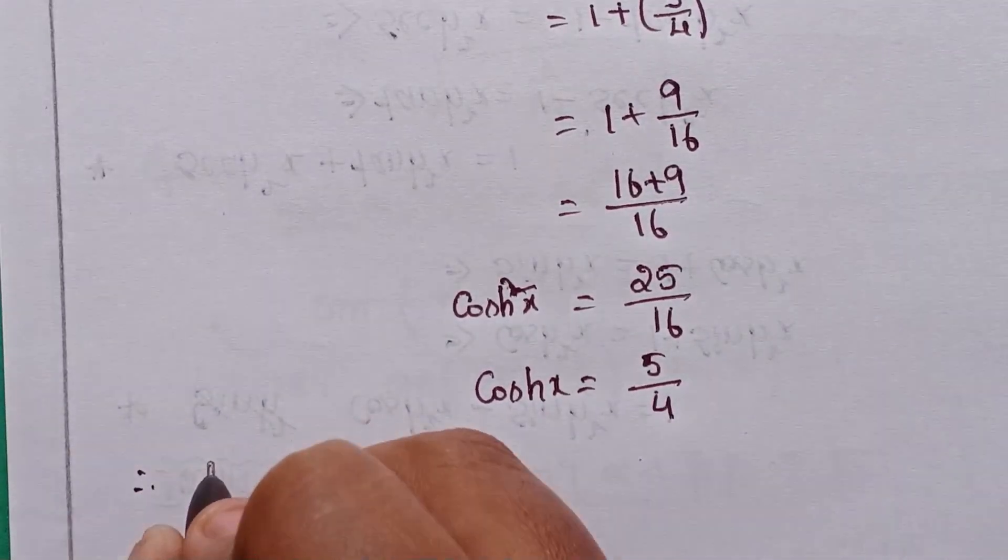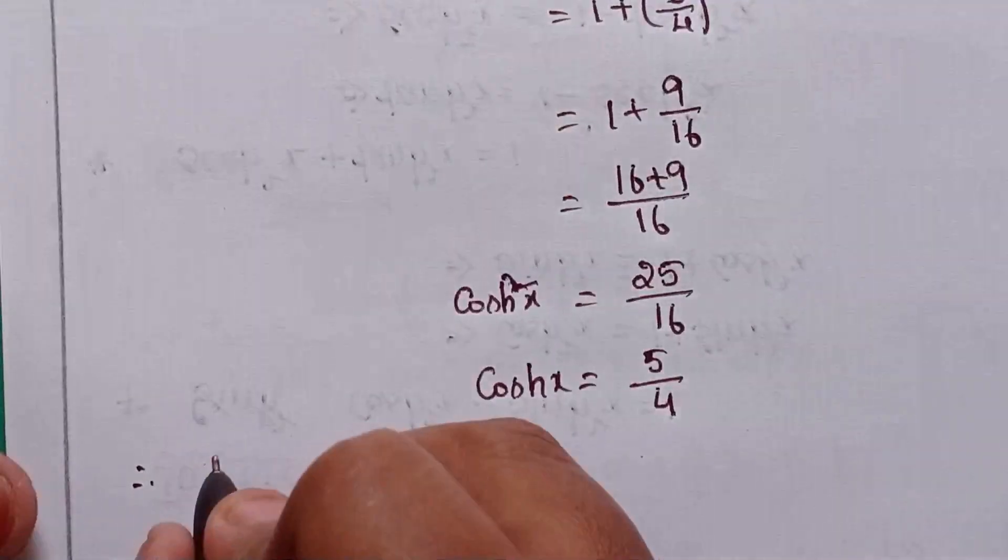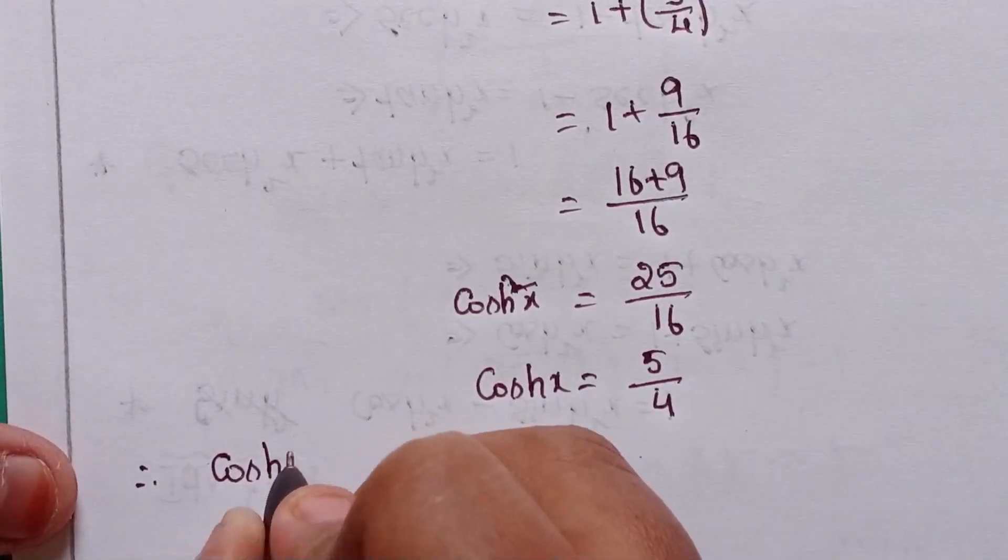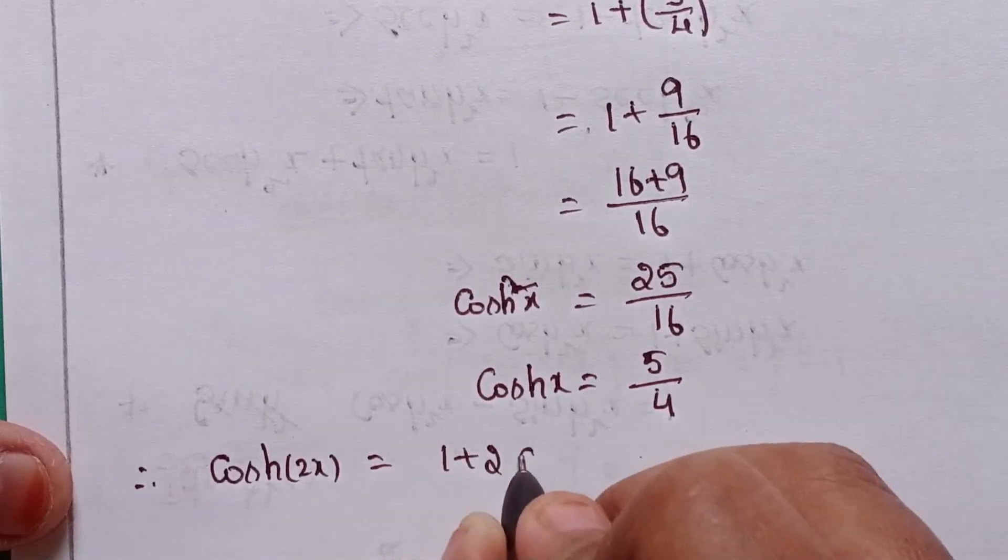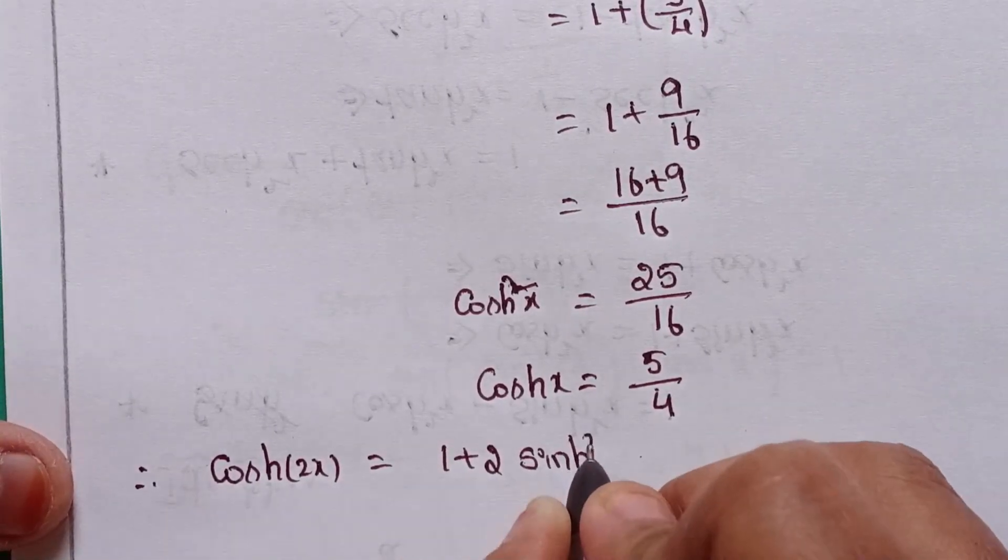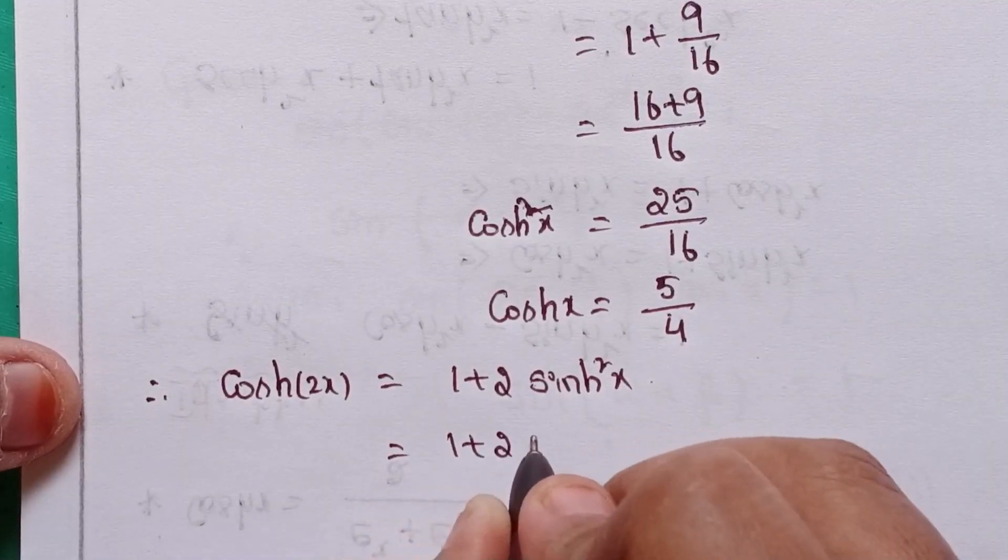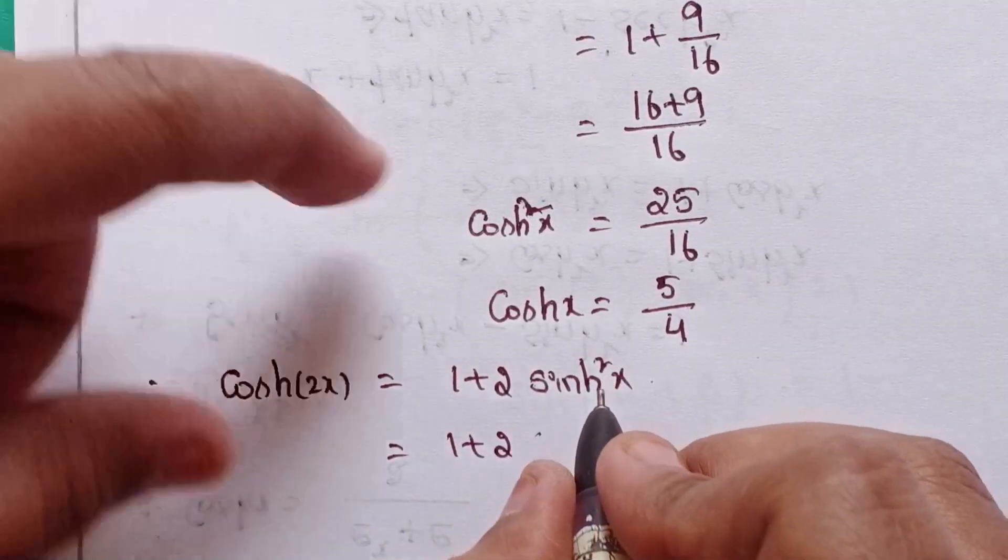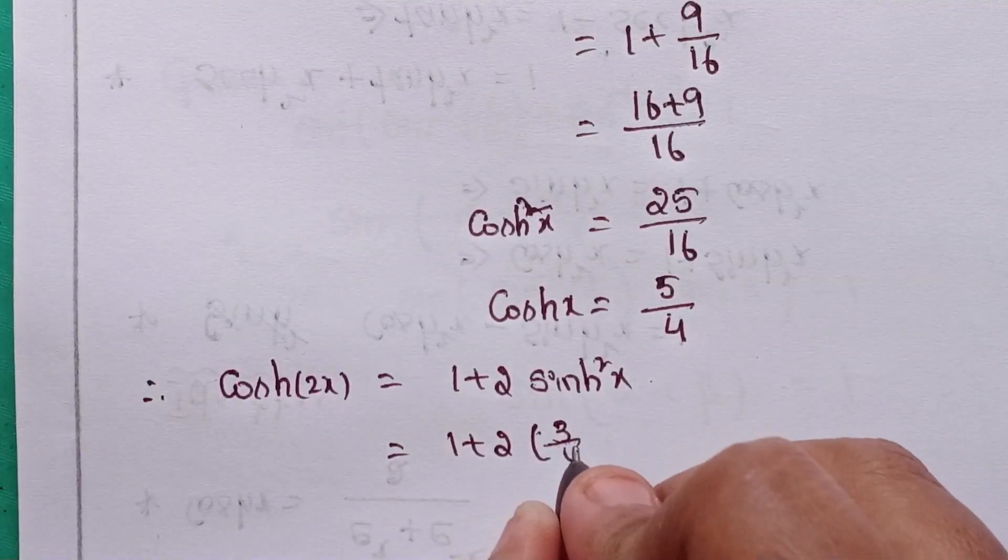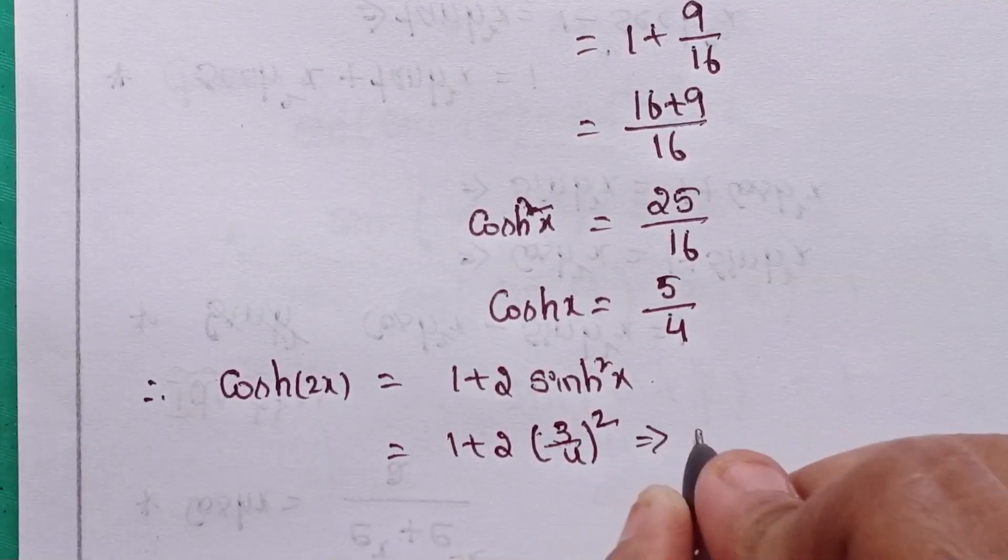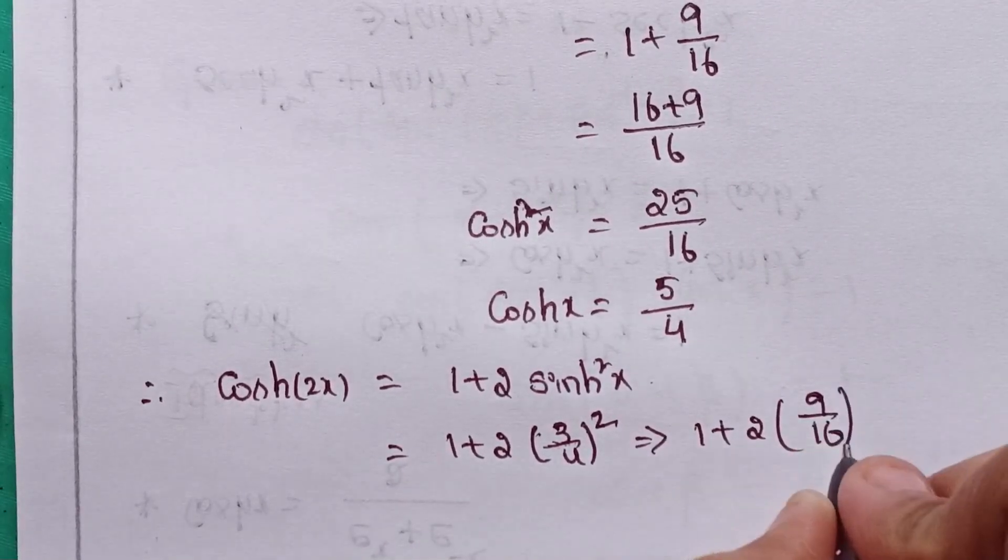Now we want cosh of 2x. The formula is 1 plus 2 sinh squared x. So 1 plus 2 sinh x, value is given as 3 by 4 whole squared. That means 1 plus 2 into 9 by 16.